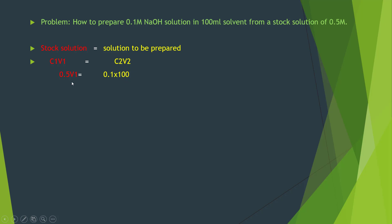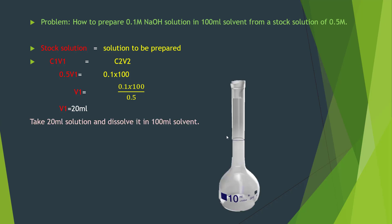This is just a simple mathematical relation. Divide 0.5 by 0.1 into 100 and this would give us a volume of 20 ml. This is the volume that has to be taken from the original solution and this will be poured into a volumetric flask to prepare a new solution.